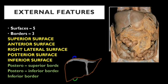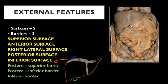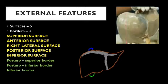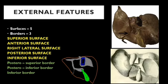The most important thing to know about the liver is its external features. The liver presents five surfaces and three borders when seen externally. The five surfaces are the superior surface, anterior surface, right lateral surface, posterior surface, and inferior surface. In the anterior view, we can easily appreciate the superior surface, anterior surface, and right lateral surface. In the posterior view, we can define the posterior surface and the inferior surface — the posterior surface occupying the upper part and the inferior surface the lower part.